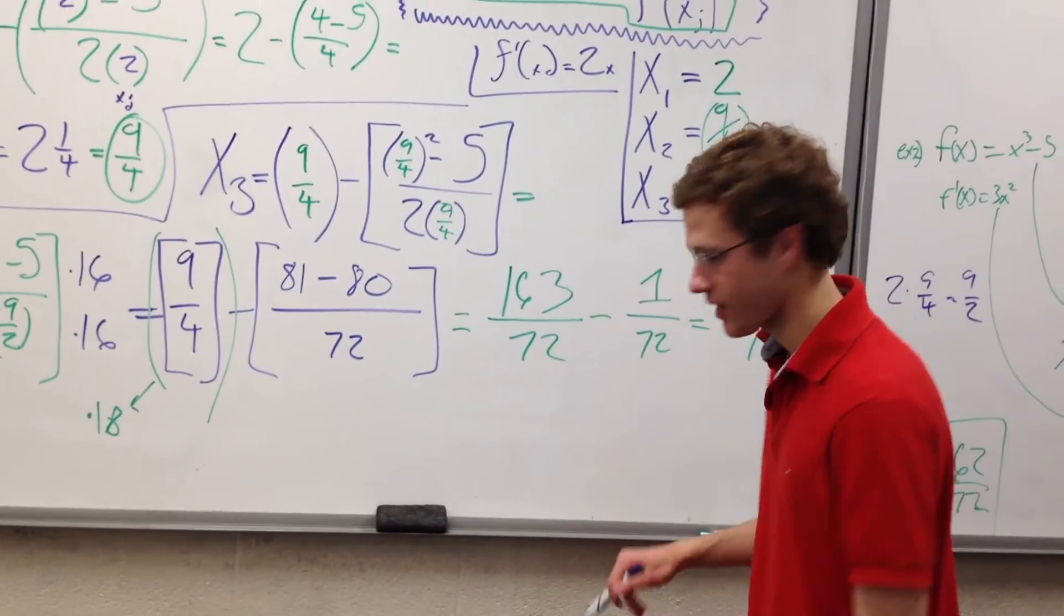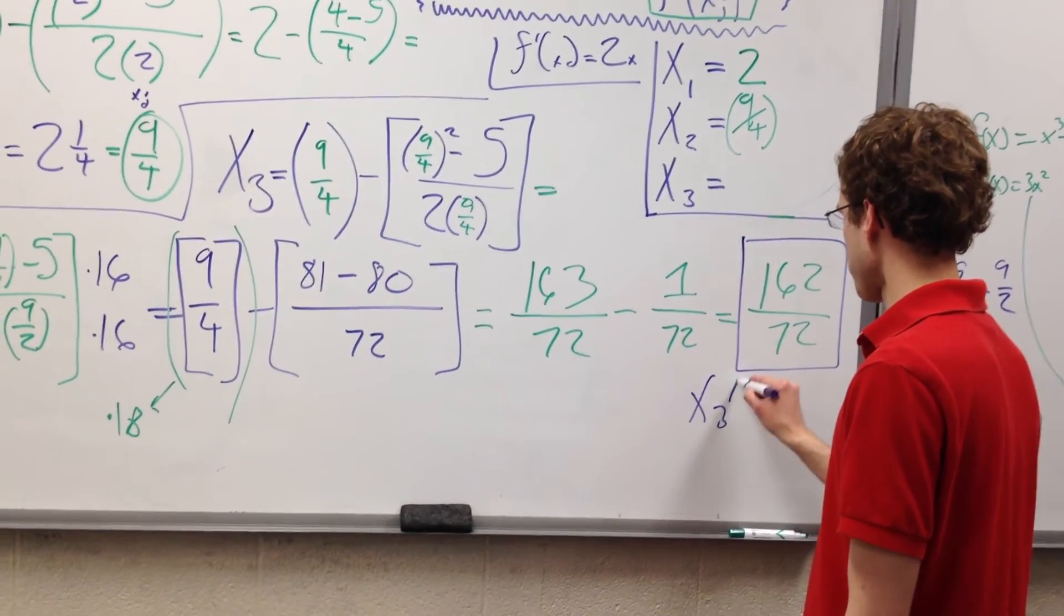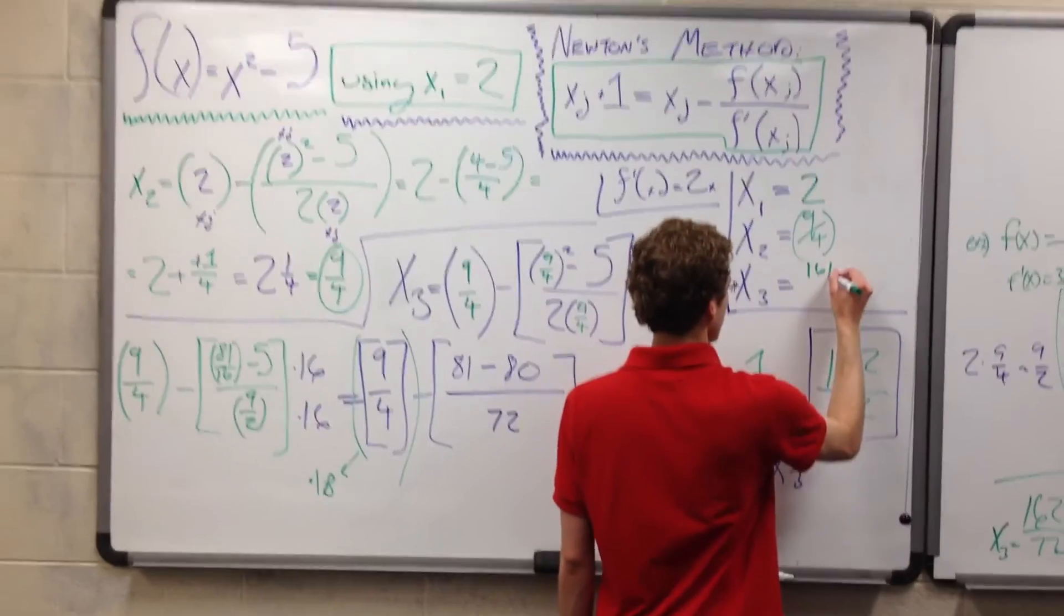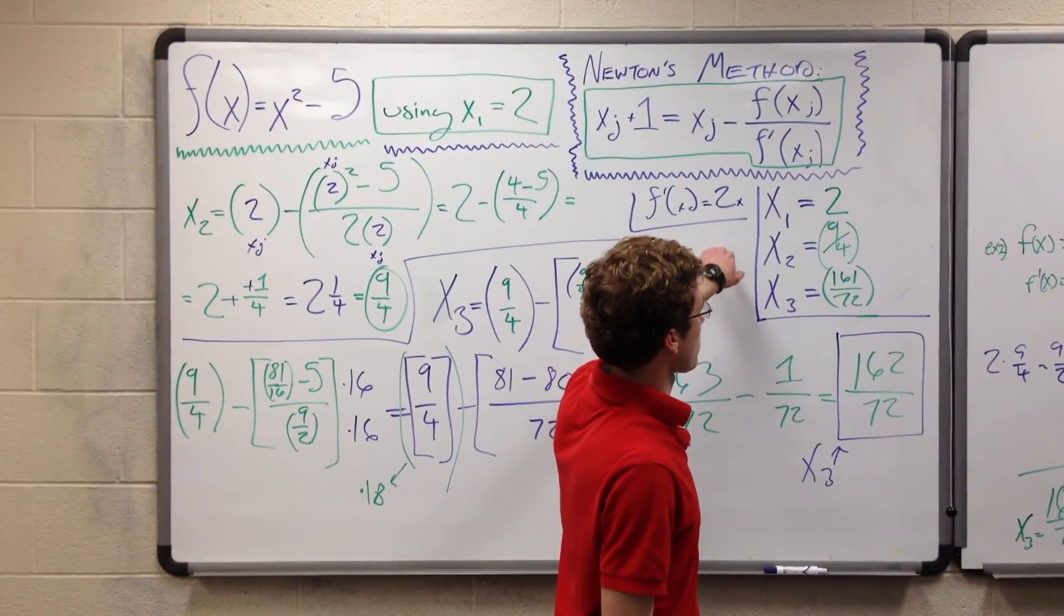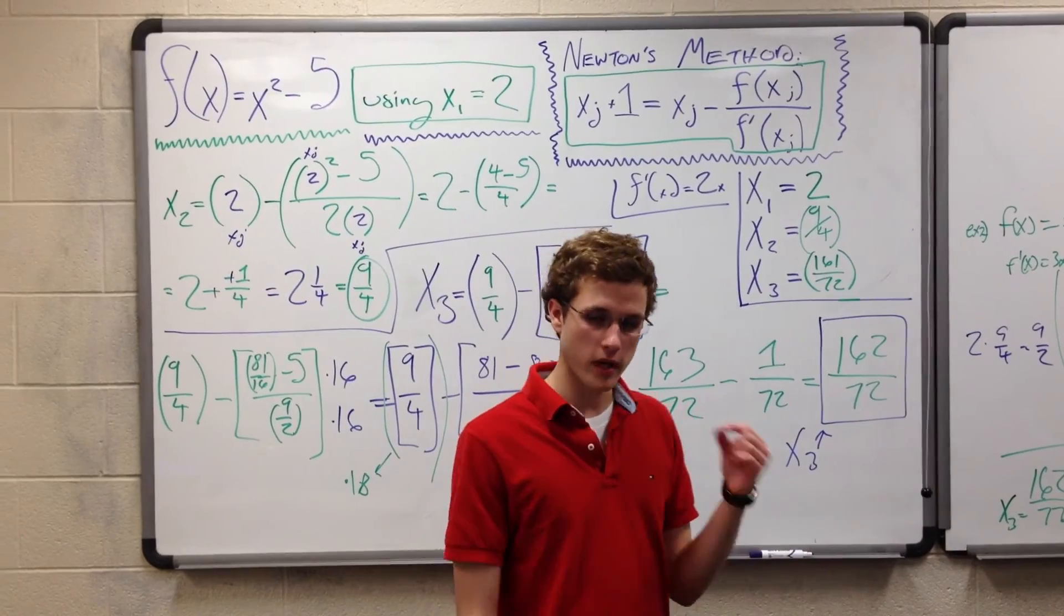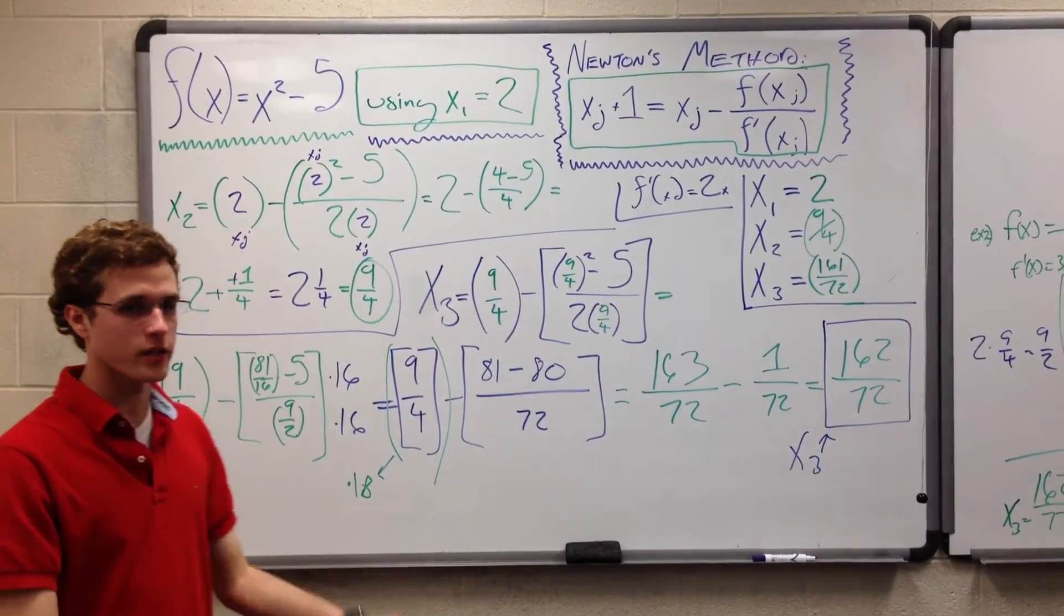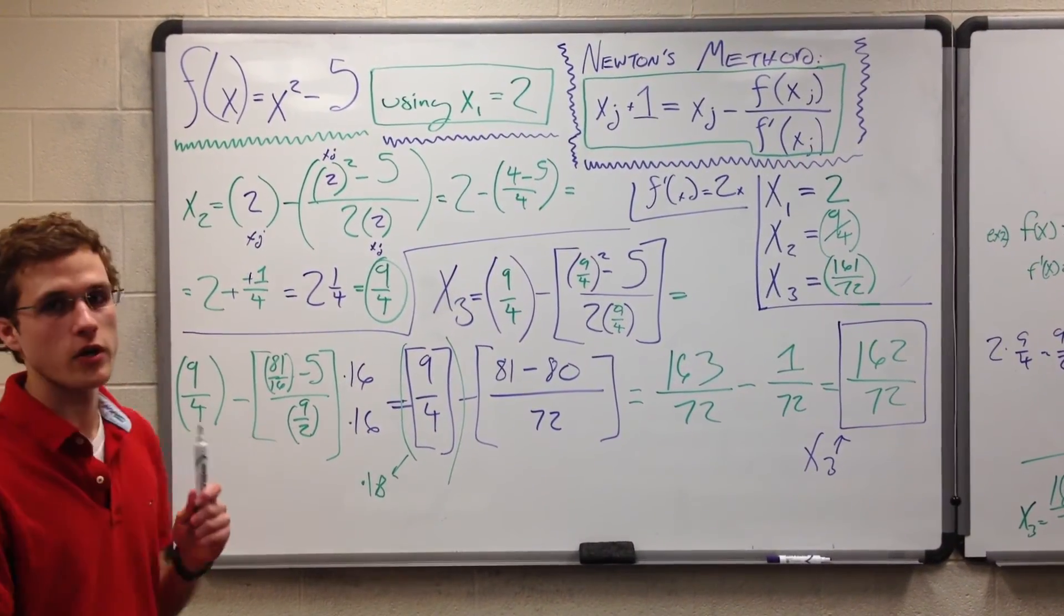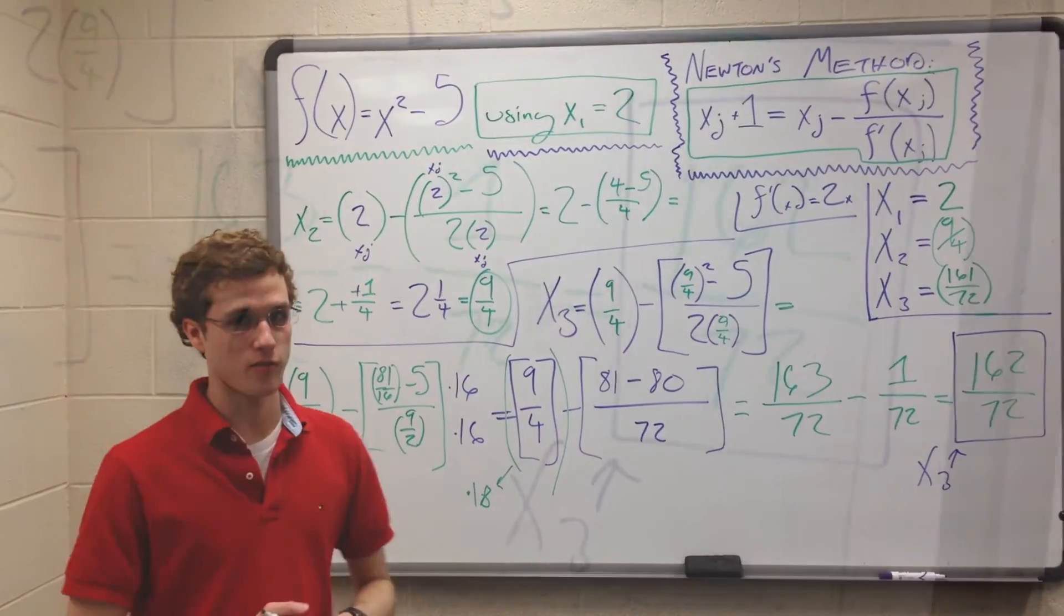This, finally, after much ado, is our x₃. We now have our x₃, which is 161/72. We can see how these numbers are getting more and more precise. We've gone from 2 to 9/4 to 161/72. We're getting more and more precise with each guess. So all of this convoluted work, which is really pretty straightforward, it just looks messy, is how you use Newton's method to approximate the value of x² - 5 with an initial x₁ of 2.